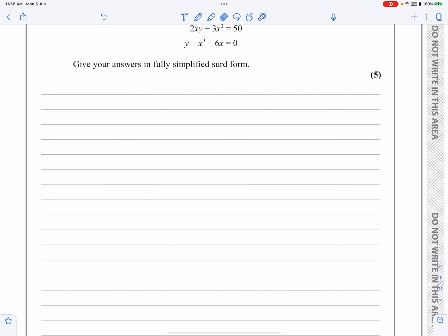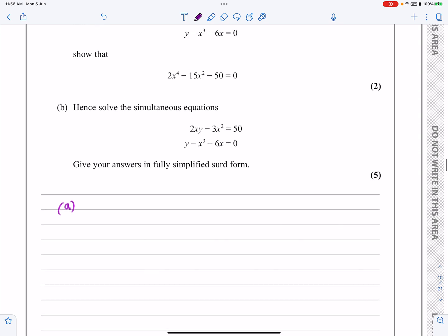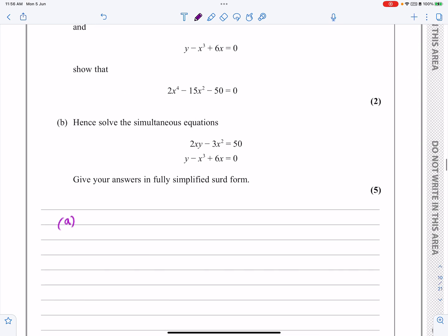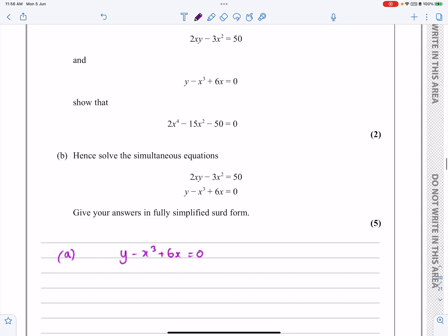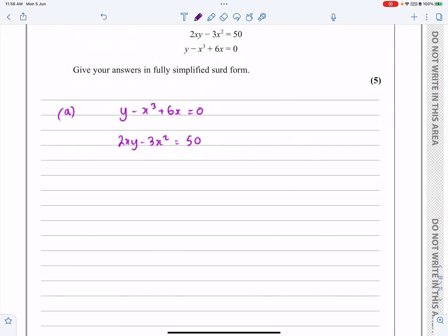So part a says, what have we got? Well, we've got y minus x cubed plus 6x equals 0, and we've got 2xy minus 3x squared equals 50, and from number 1 I'm going to get y equals x cubed minus 6x.